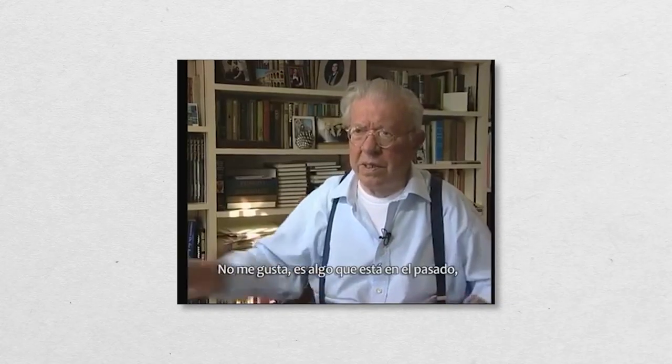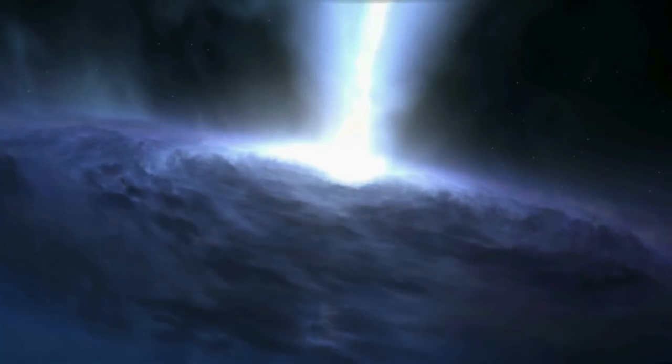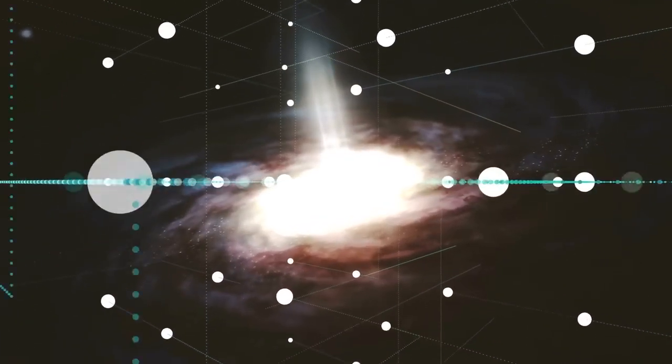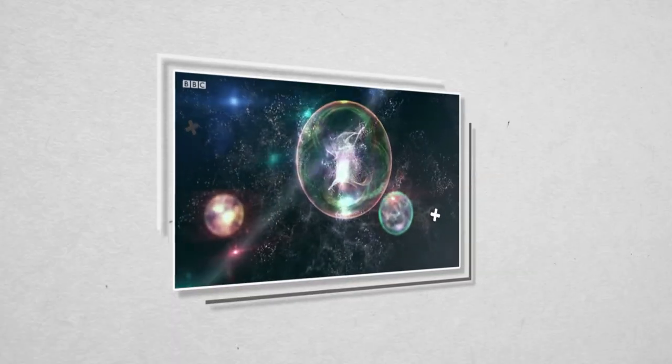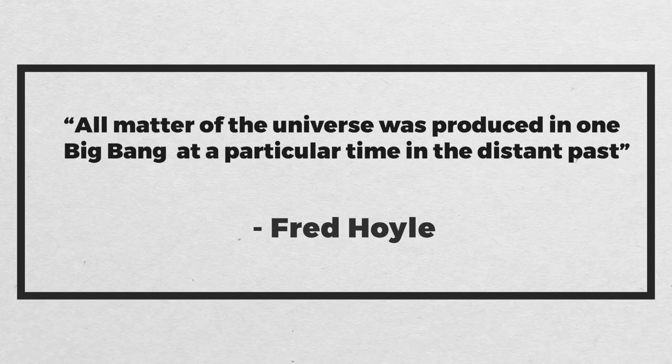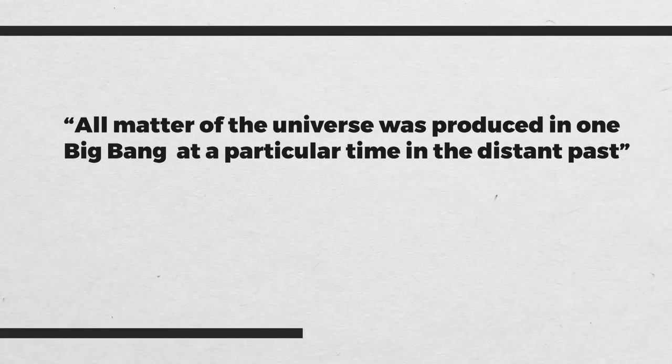He made an appearance on BBC Radio in 1949 to promote what he called the perfect cosmological principle, the idea that the universe is homogeneous in both space and time, meaning that any observer, anywhere in the world, at any moment, would view the universe to be in the same cosmic shape. The opposing explanation, which he subsequently labeled irrational and claimed to be beyond science, was derided as a hypothesis that all matter of the universe was produced in one Big Bang at a particular time in the distant past, he continued.